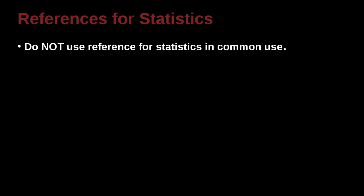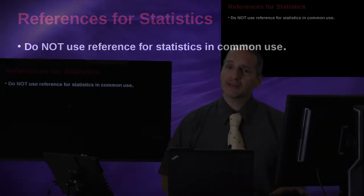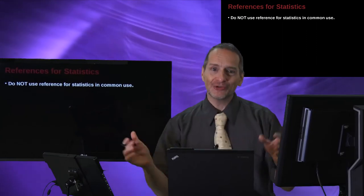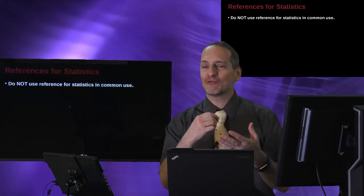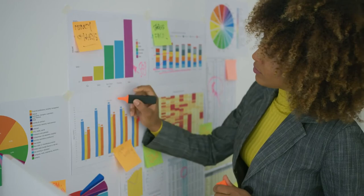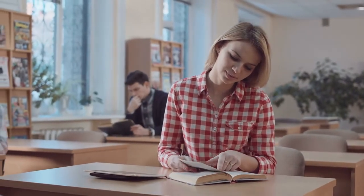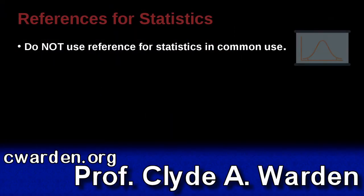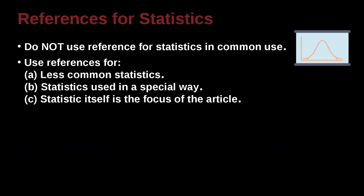So what about statistics? Well, when you're writing your statistics, you do not need to reference statistics that are in common use. That is to say that if the statistic is a statistic everybody knows, please do not write a reference to say who made this statistic or where is it from. You don't need to do that. Just use the statistic. And we're talking about things like ANOVA and t-test, things like regression. You don't need to say where they came from.